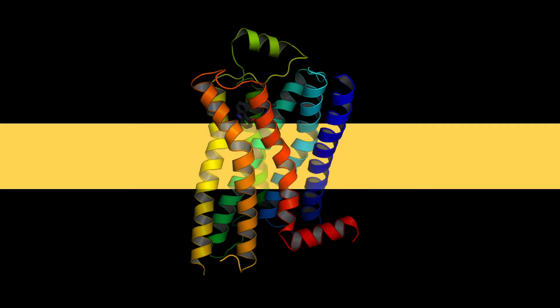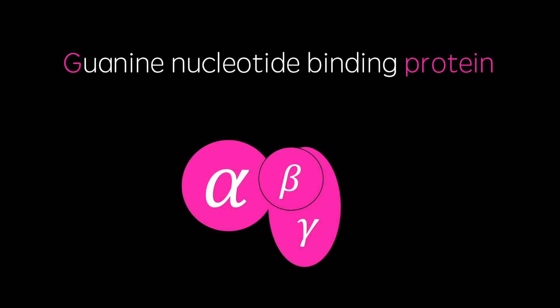Their most distinguishing feature is their G proteins or guanine nucleotide binding proteins, which consist of alpha, beta, and gamma subunits.